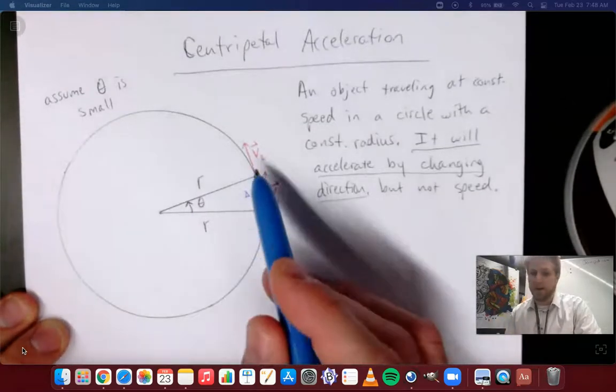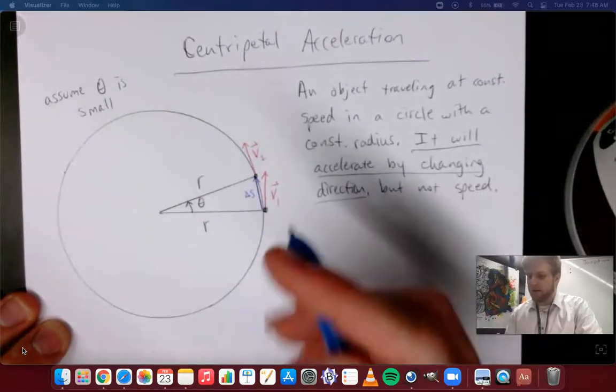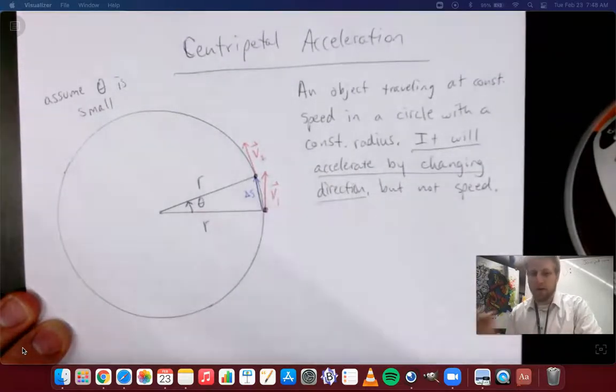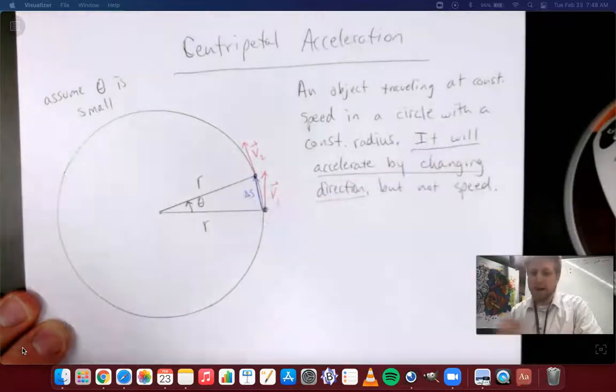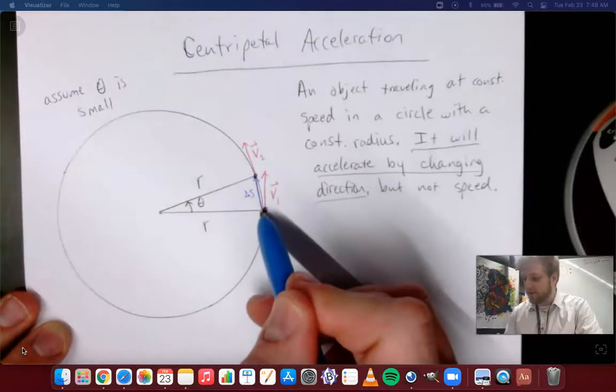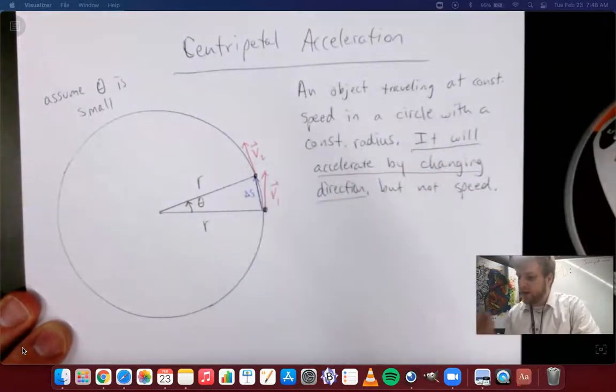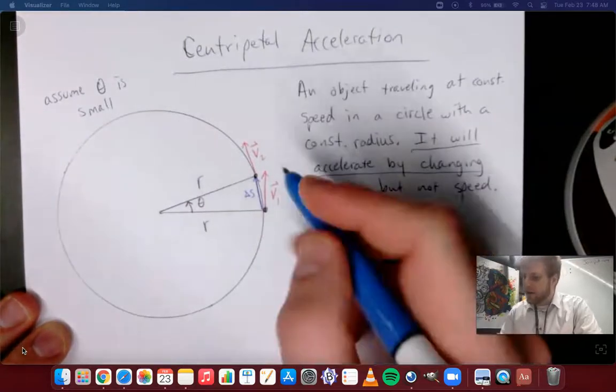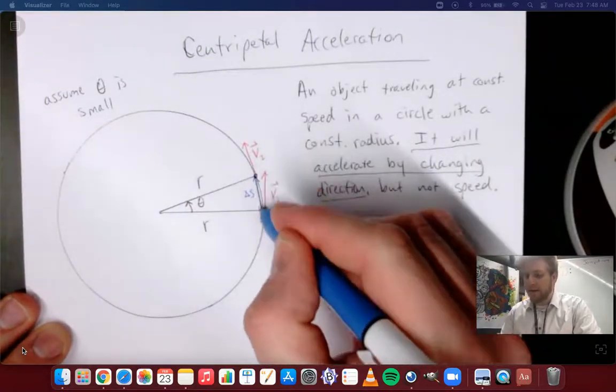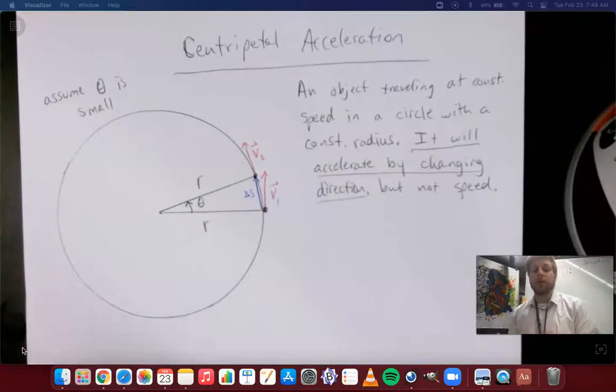I'm actually quite a bit exaggerating here. The reason we want to do that is so that this actually ends up being very close to a triangle. This delta s that I've drawn in there is the straight line distance that it's traveled, and you notice if I zoom in close that the arc length that it's traveled and that distance are very similar. That's really important for actually doing our proof, but overall the thing you want to get out of this is the formula.